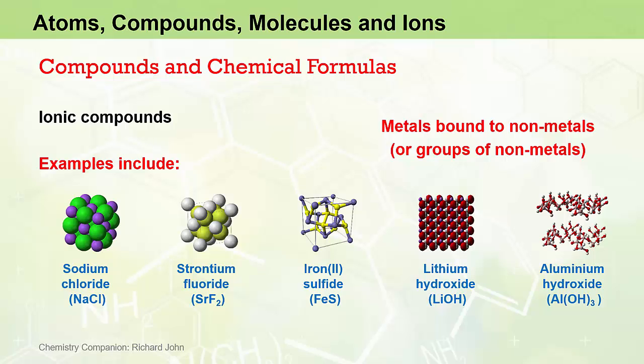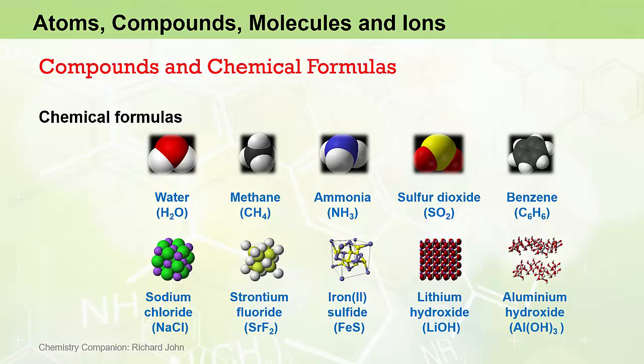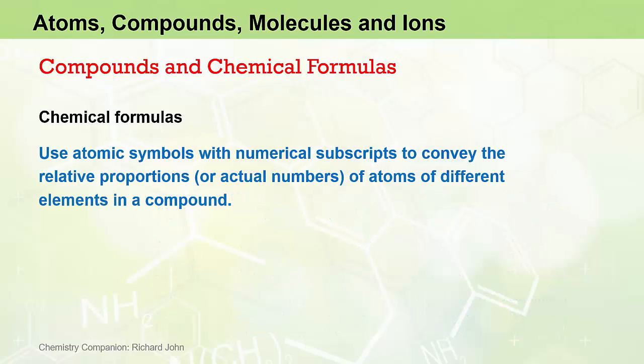Now, the rules for naming compounds will be dealt with later. For now, we are going to focus on how we represent compounds using chemical formulas. In all the examples we just observed, the chemical compounds were displayed with their full name and a shorthand notation in brackets known as the chemical formula. Chemical formulas use atomic symbols of elements, which we can easily get from the periodic table, in combination with numerical subscripts to convey the relative proportion or actual numbers of atoms of different elements in a compound.